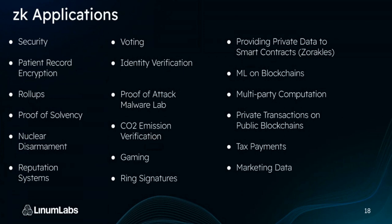Because zero knowledge can condense information so well, it allows for scalability through rollups — batching transactions on a layer two and sending them to layer one, increasing transaction speed and reducing gas costs. Proof of solvency: a company can prove to a bank that it's solvent given its expenses, without revealing exactly how much money it has. Nuclear disarmament: Russia could prove they've turned off all their nuclear weapons without saying which ones or where — creating a zero knowledge proof that they are off, without revealing locations.